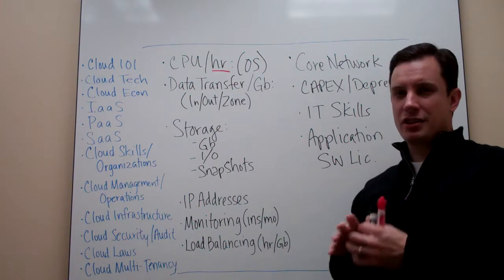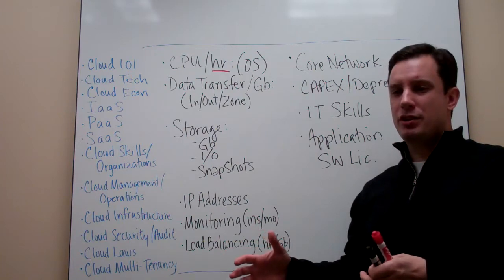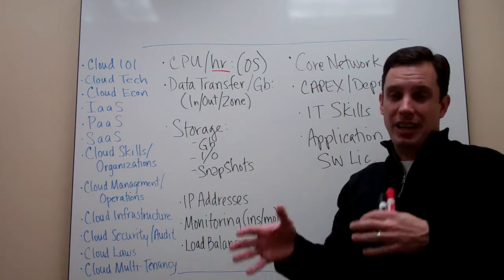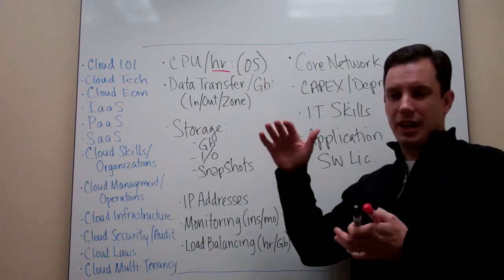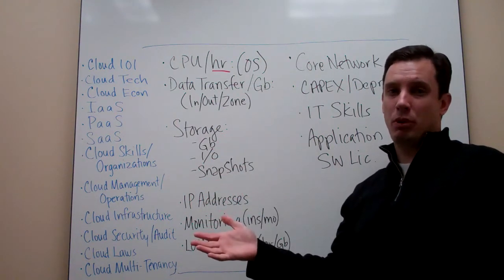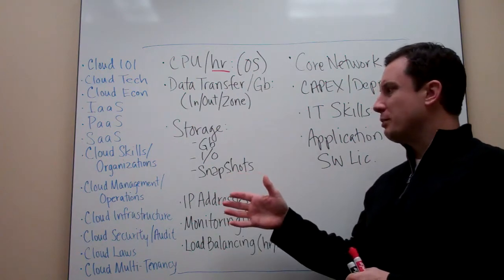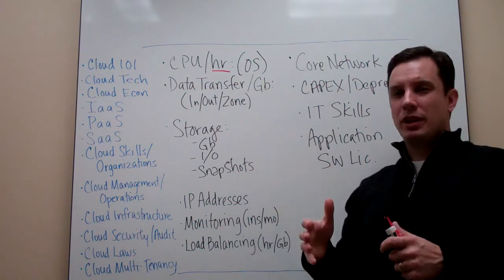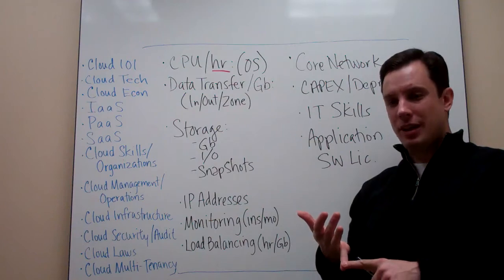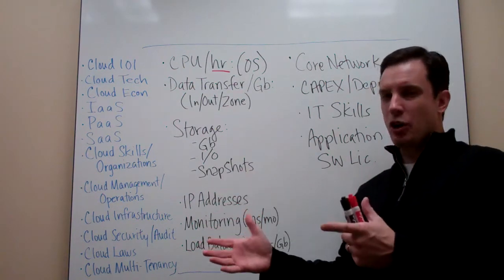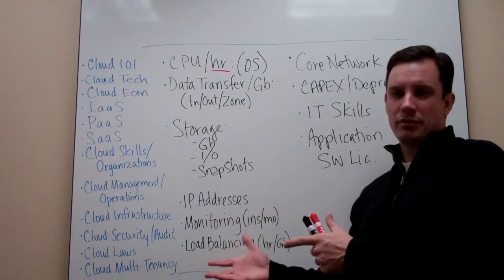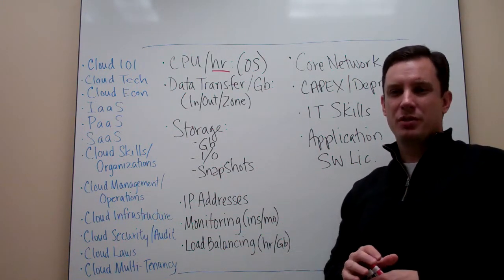So again, this doesn't go into all the economics, but I wanted to take the economic discussion a level deeper to be able to really look at what's under the covers of cloud economics using infrastructure as a service as an example. And being able to say, I have to really understand my application. I have to understand what it looks like from a performance perspective, from an IO perspective, from a consumption of resources, bandwidth, storage, network resources.